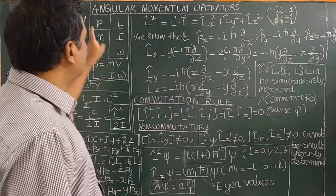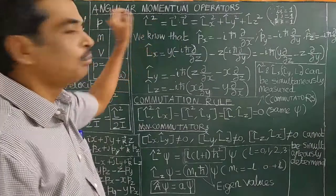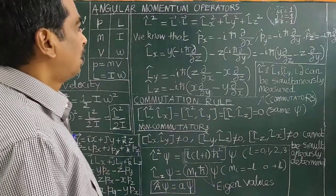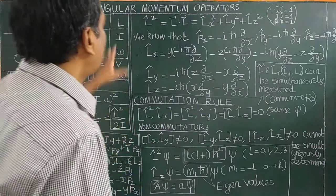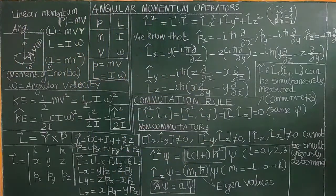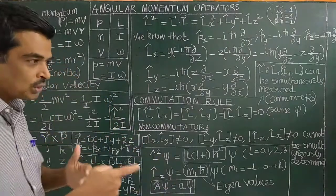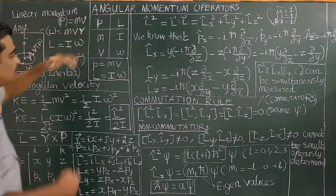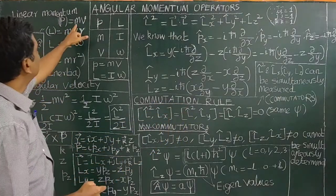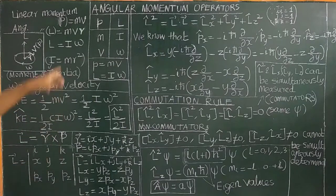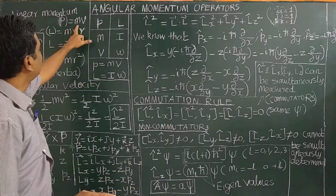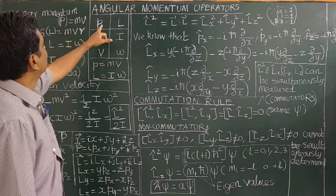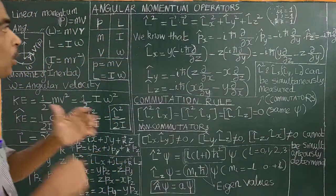Good morning. This is what we call Angular Momentum Operators. Angular Momentum is what we call Angular Momentum Operators. For example, you have linear momentum, linear motion. Linear momentum is due to linear motion — linear means straight line. In classical physics, the linear momentum is given by M into V, mass of the particle and velocity of the particle. Again, when you are talking about Angular Momentum, angular momentum is due to rotatory motion.